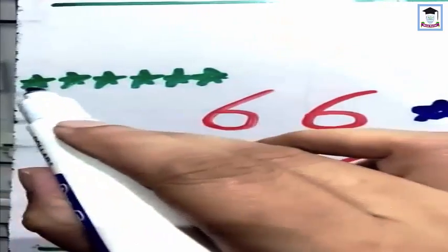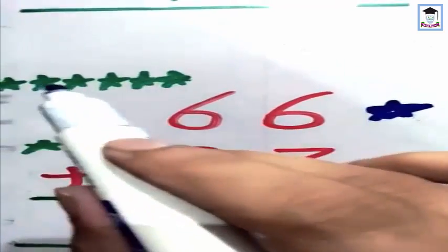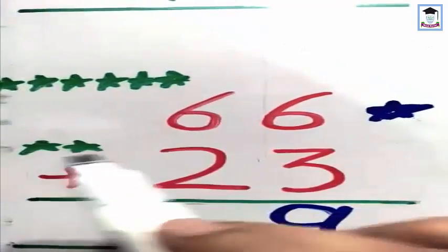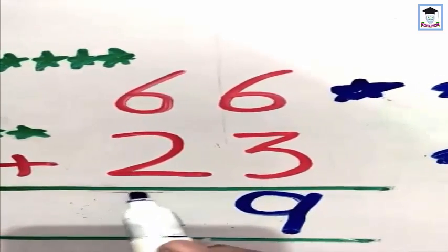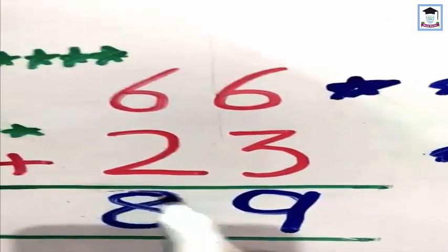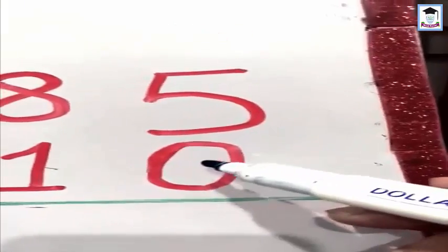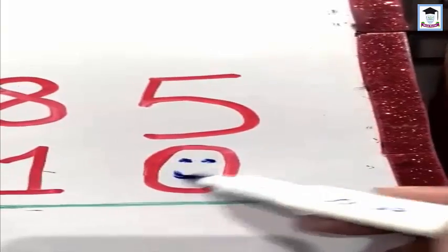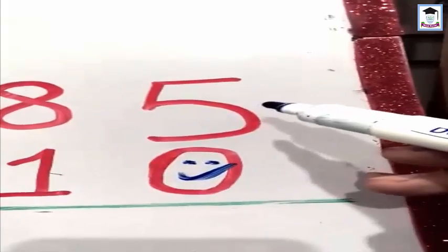Next: 6 plus 2. One, two, three, four, five, six, and now add two more — one, two. Total count: one, two, three, four, five, six, seven, eight. Six and two makes eight. Now the total is 89. Next: 5 plus 0. Zero means empty, zero means nothing. So we write five as it is.